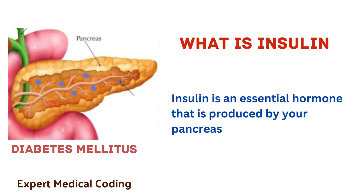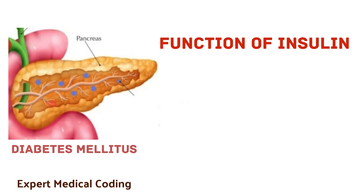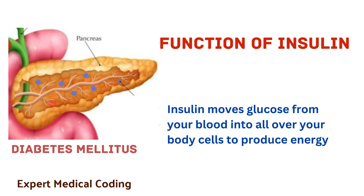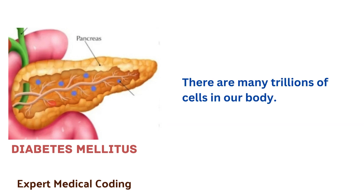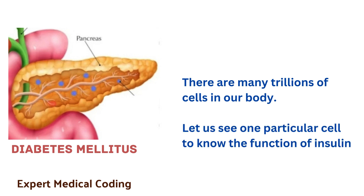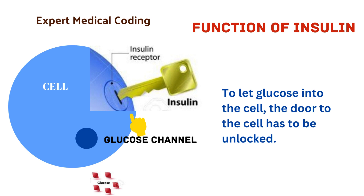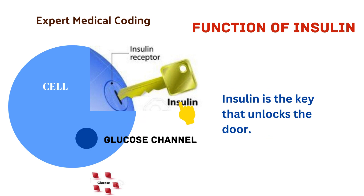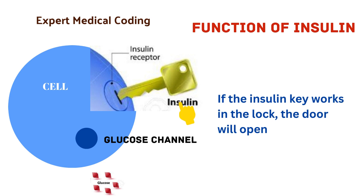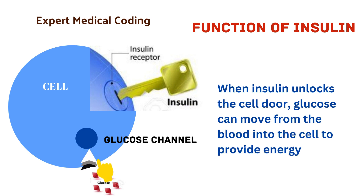What is insulin? Insulin is an essential hormone that is produced by your pancreas. The function of insulin is to move glucose from your blood into all over your body cells to produce energy. There are many trillions of cells in our body. To let glucose into the cell, the door to the cell has to be unlocked. Insulin is the key that unlocks the door. If the insulin key works in the lock, the door will open. When insulin unlocks the cell door, glucose can move from the blood into the cell to provide energy.